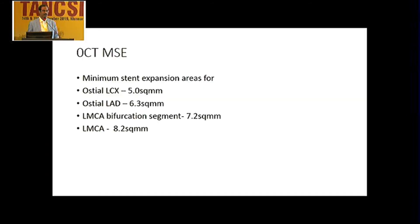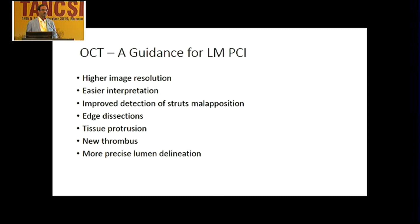The minimal stent expansion index is the most important post-PCI parameter, predicting restenosis and stent thrombosis. The targets are: LCX 5 mm², LAD 6.3 mm², bifurcation 7.2 mm², and left main 8.2 mm². OCT is therefore very important in predicting good optimization, reducing stent under-expansion and malapposition, and detecting edge dissections, enabling safe OCT-guided left main stenting.